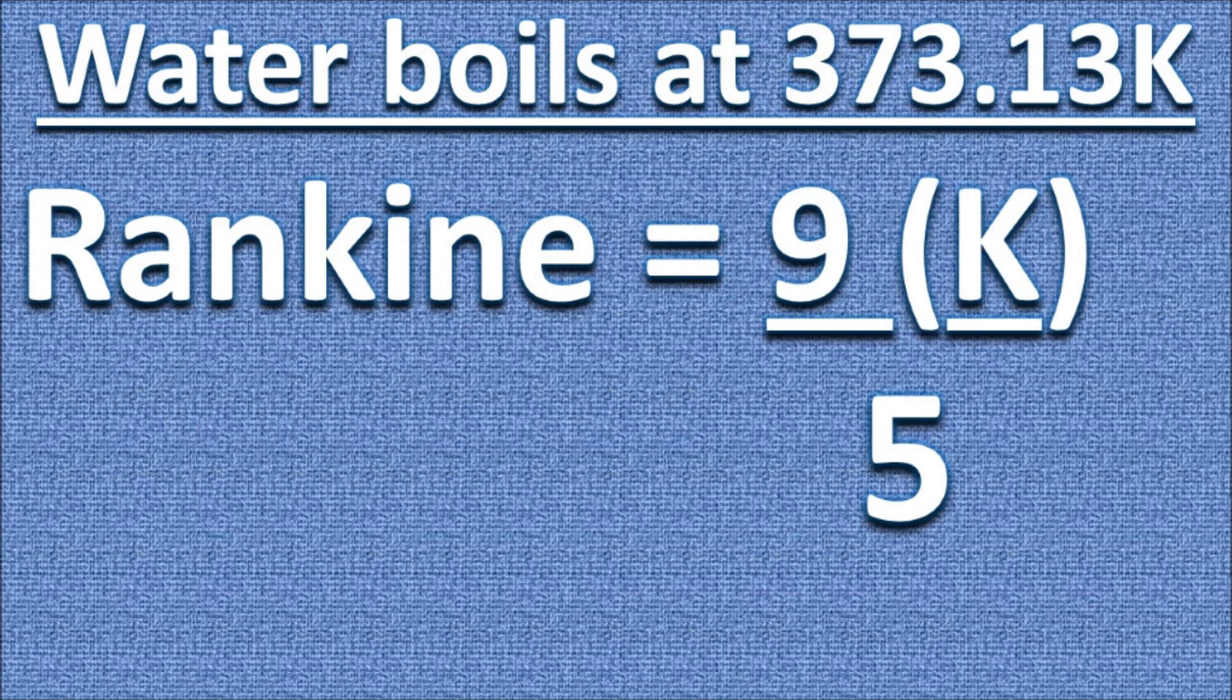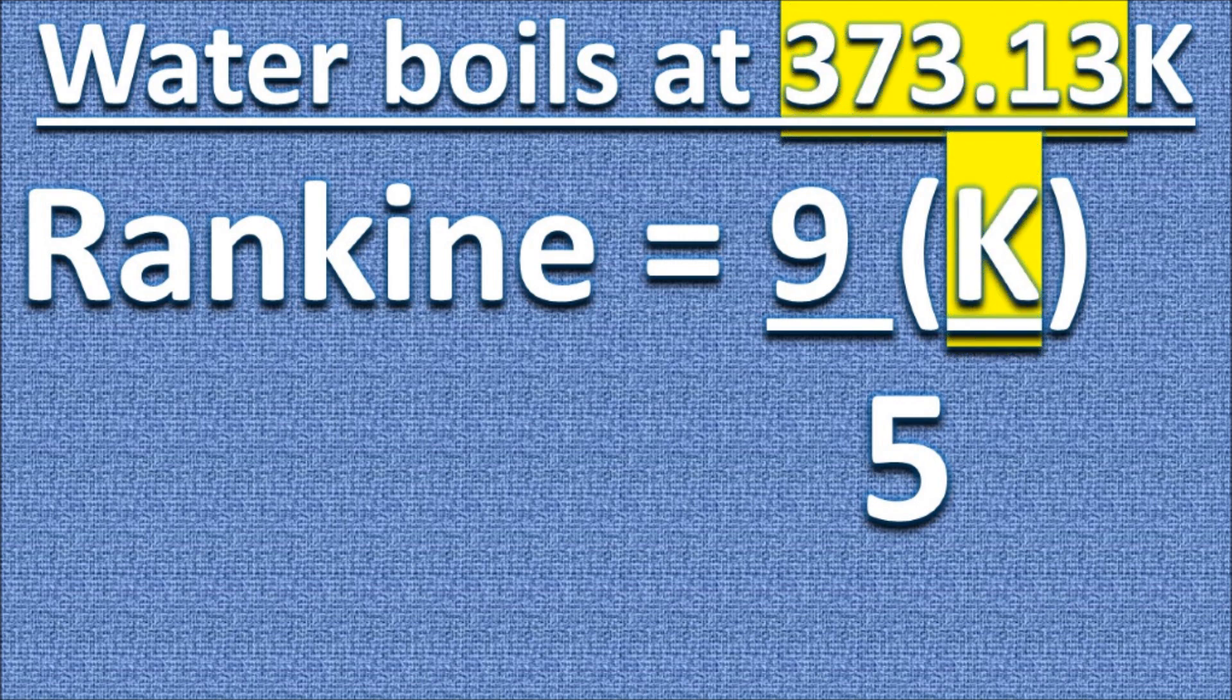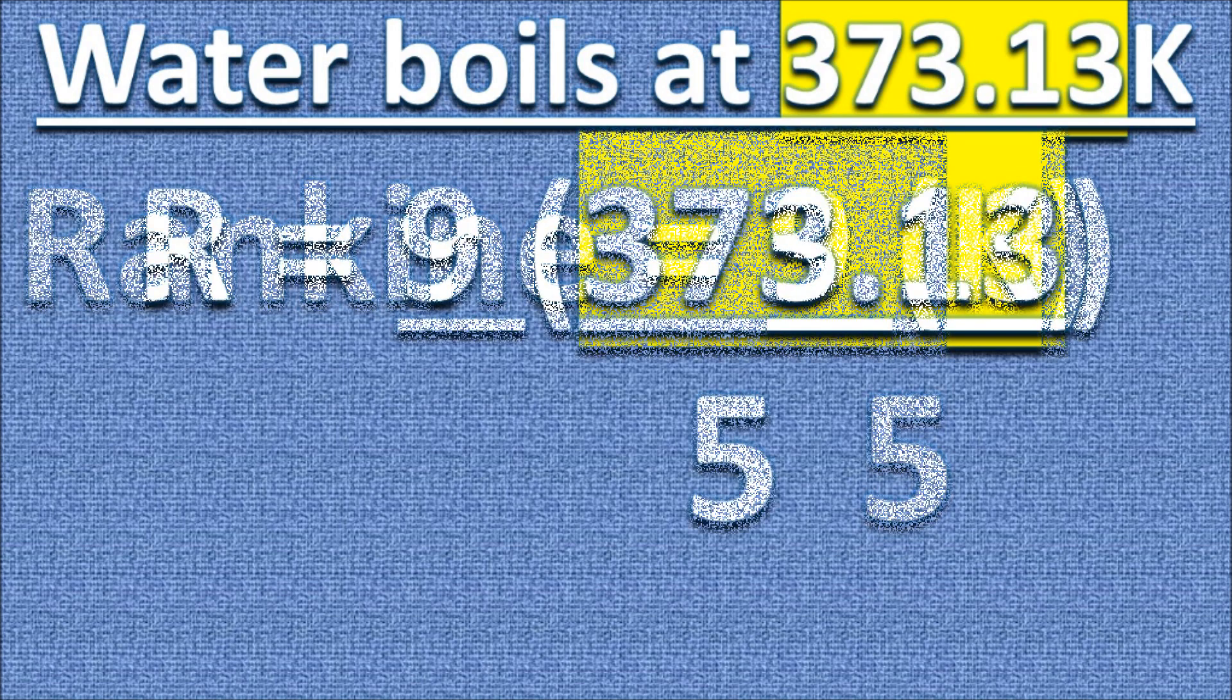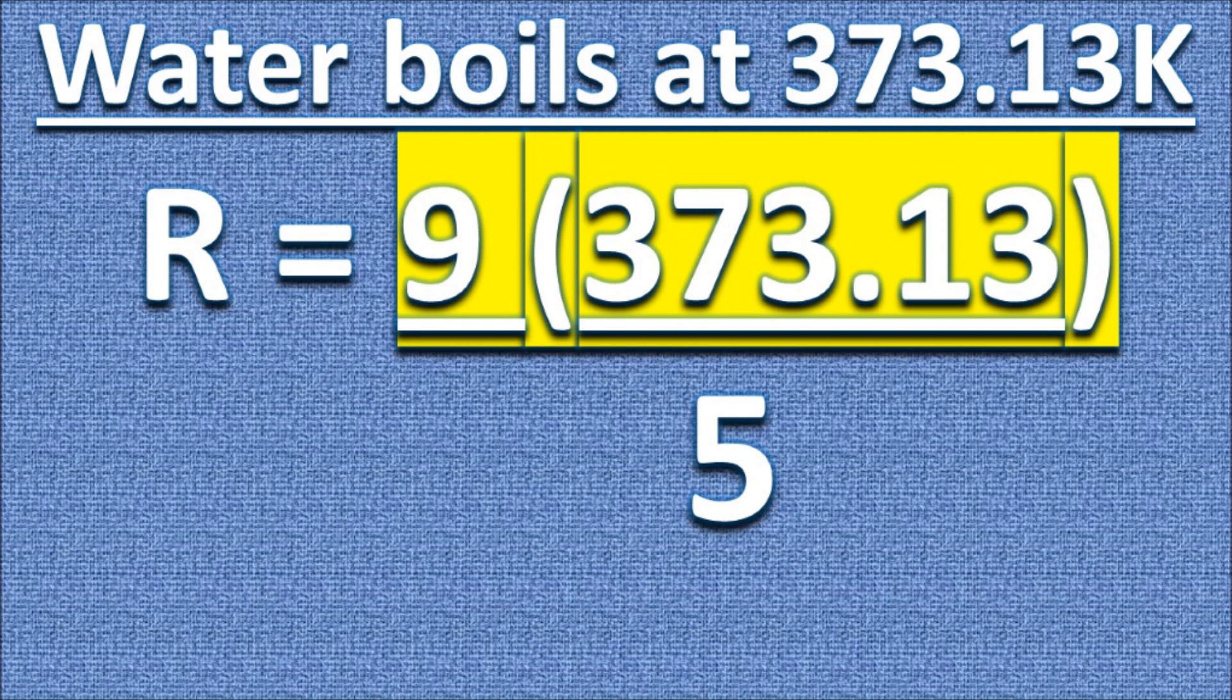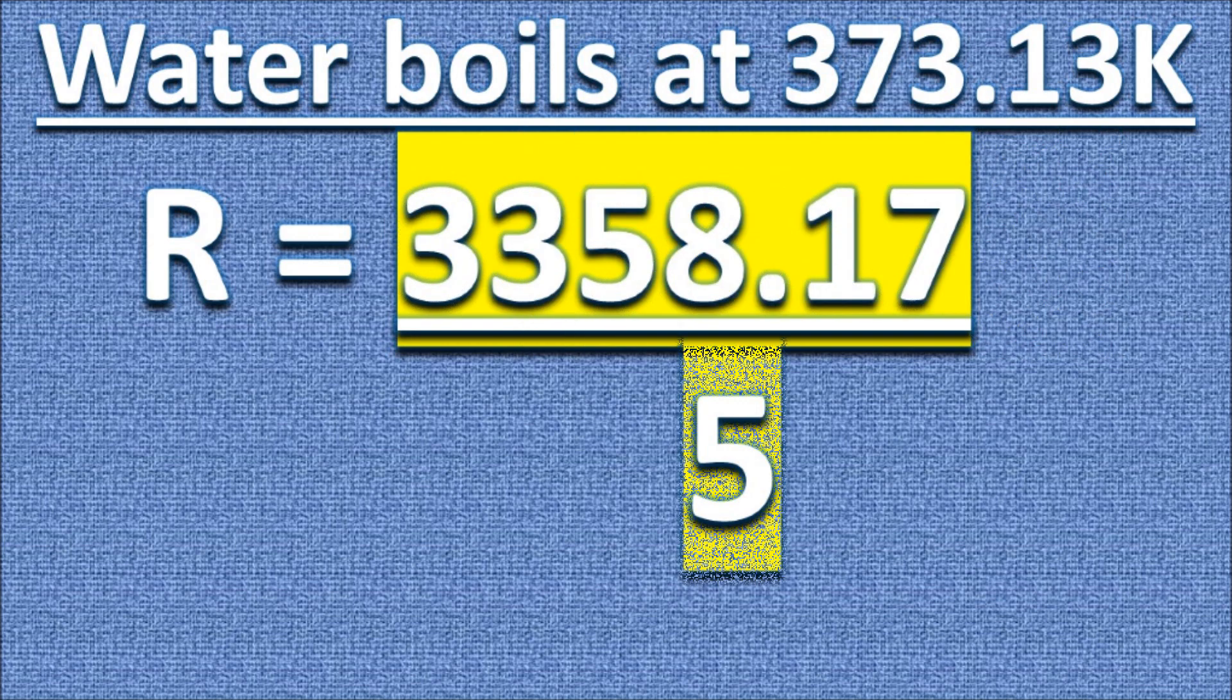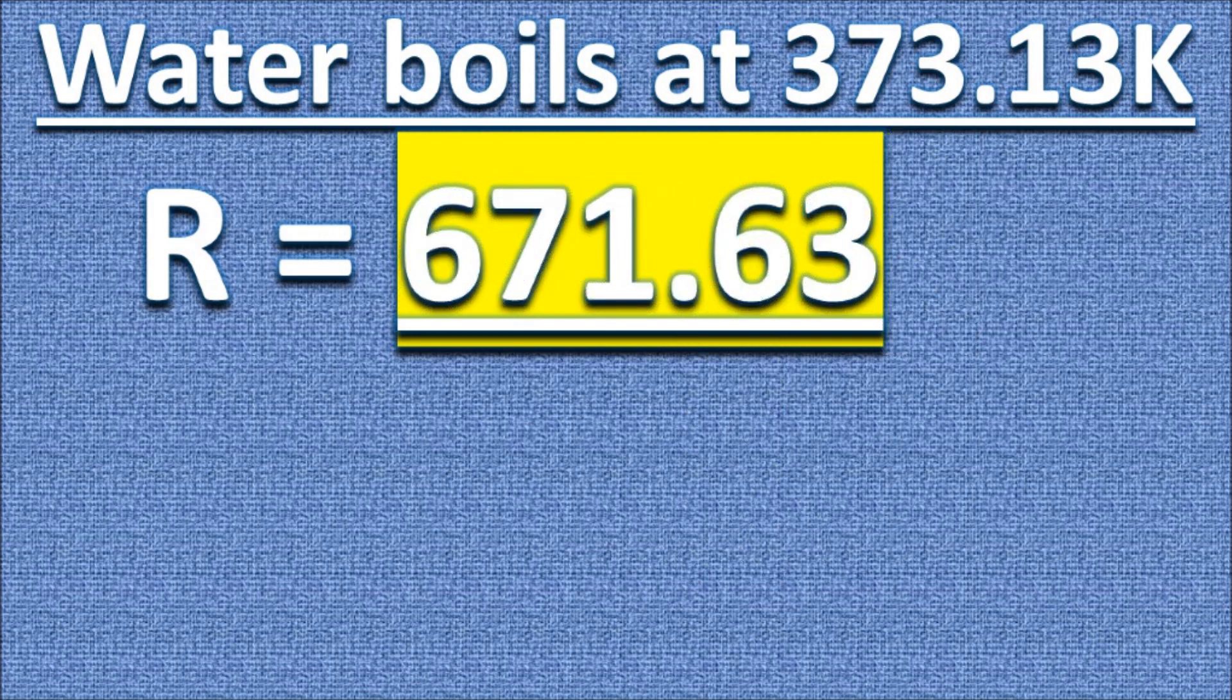Let's try another example. Let us find the value that represents boiling water on the Rankine scale. Water boils at 373.13 Kelvin. We plug that value in for K. Multiply by 9. Divide by 5. So water boils at 671.63 on the Rankine scale.